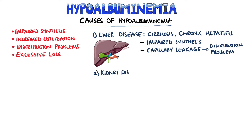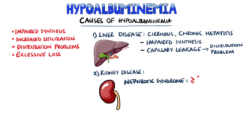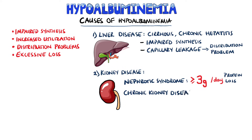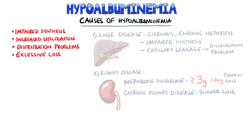Kidney disease is another cause. Hypoalbuminemia is one of the features of nephrotic syndrome, where patients are losing more than 3 grams per day of protein. It can also occur in chronic kidney disease, where the protein loss is not as quick, but over a long period of time, small, consistent losses will lead to hypoalbuminemia.